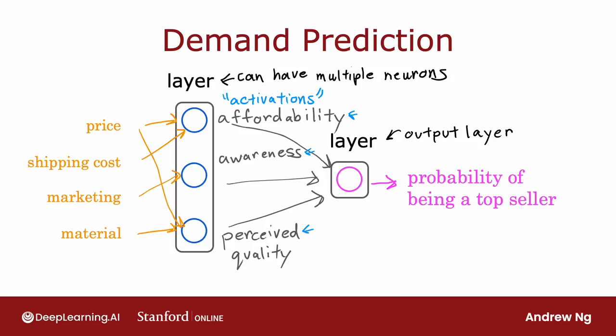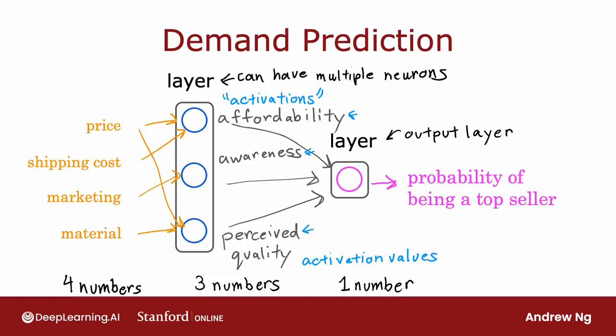So this particular neural network carries out computations as follows. It inputs four numbers. Then this layer of the neural network uses those four numbers to compute three new numbers, also called activation values. And then the final layer, the output layer, uses those three numbers to compute one number. In a neural network, this list of four numbers is also called the input layer.